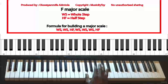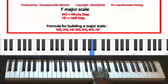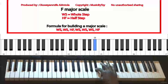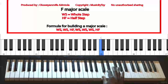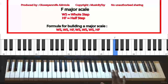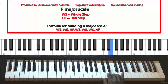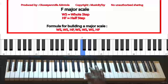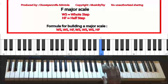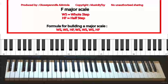Now let's do that again. Starting from the key of F, let's take a whole step, then another whole step, then a half step, then a whole step, then a whole step, then a whole step, and then a half step. See that? That is the F major scale. Thank you for watching this lesson guys and I will see you in the next lesson.